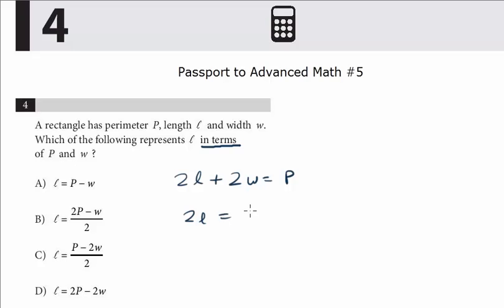So 2L equals P minus 2W. And now we divide both sides by 2. And we know that L equals P minus 2W over 2. If you look at the choices, we don't have to reduce it any further. We've arrived at the answer, and it's C.